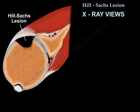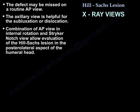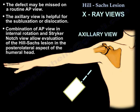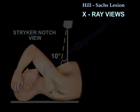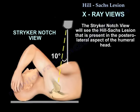Regarding x-rays, the defect may be missed on routine AP views. The x-ray view is helpful for subluxation or dislocation; however, a combination of an AP view in internal rotation and a Stryker notch view will allow evaluation of the Hill-Sachs lesion present in the posterolateral aspect of the humeral head.